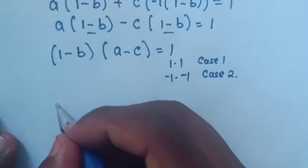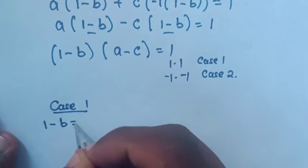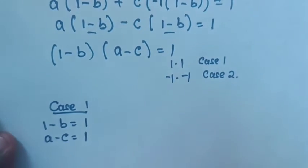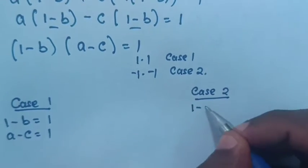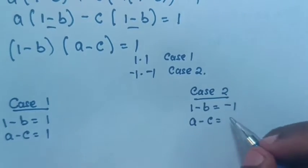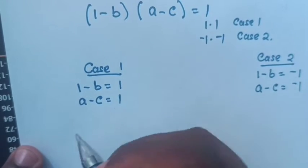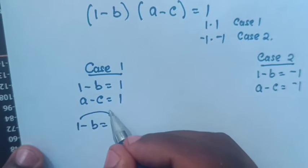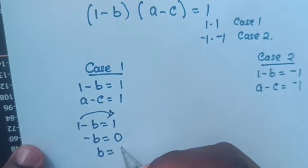To solve Case 1: where 1 minus B equals 1 and A minus C equals 1. From 1 minus B equals 1, we take 1 to the right side, so negative B equals 0. Dividing by negative, B equals 0.